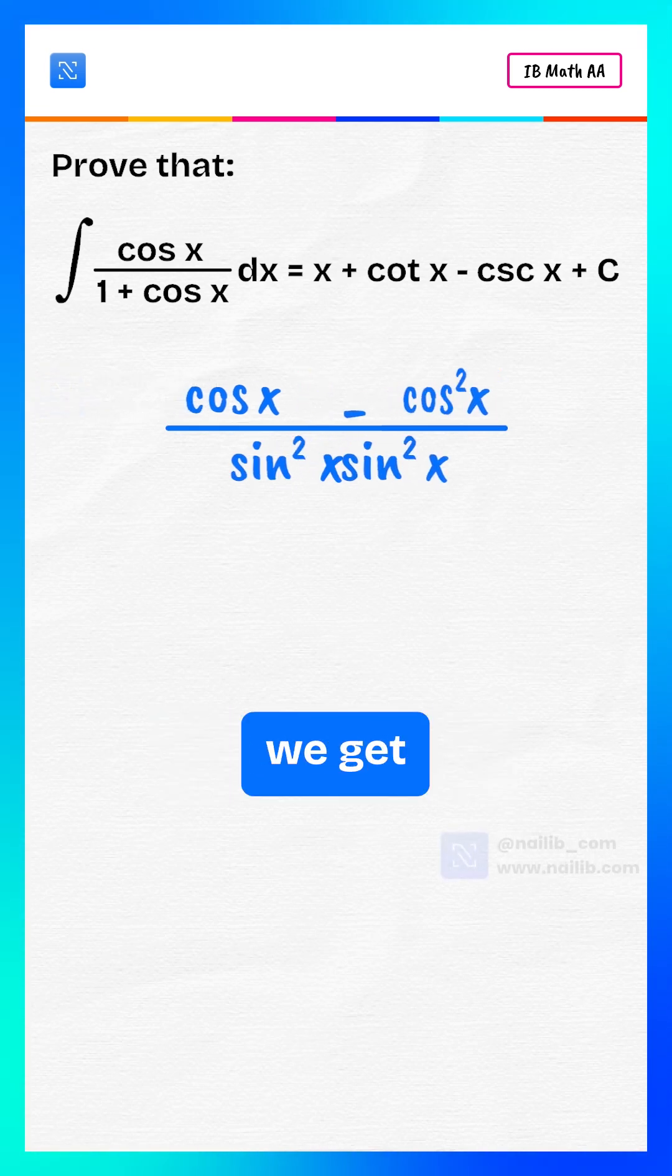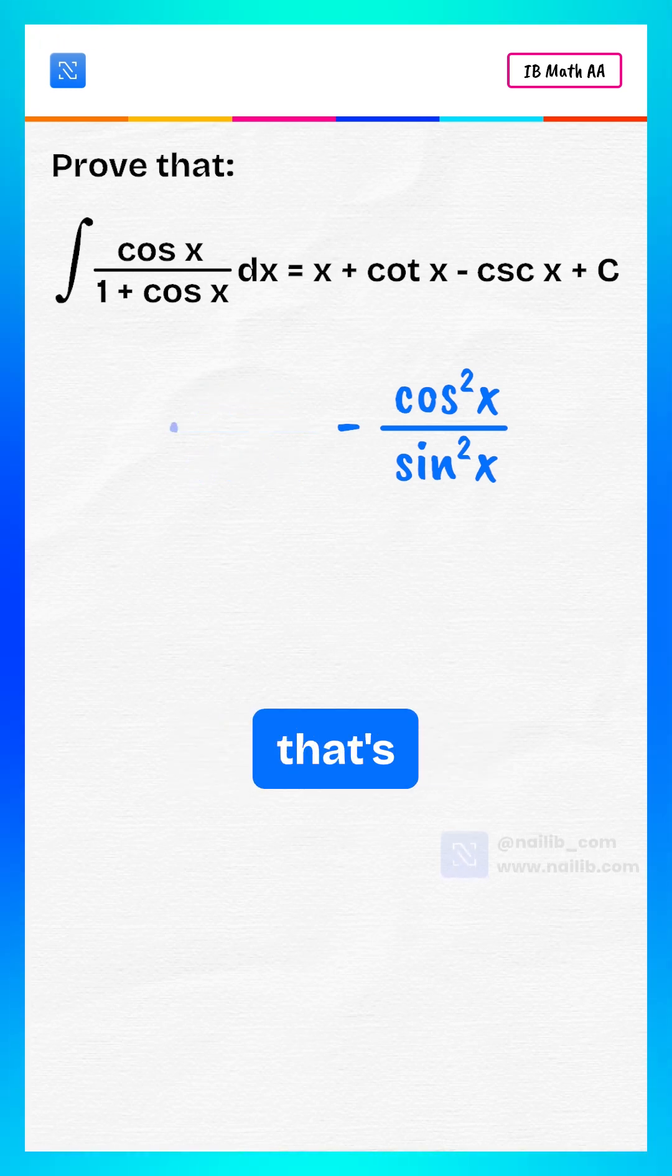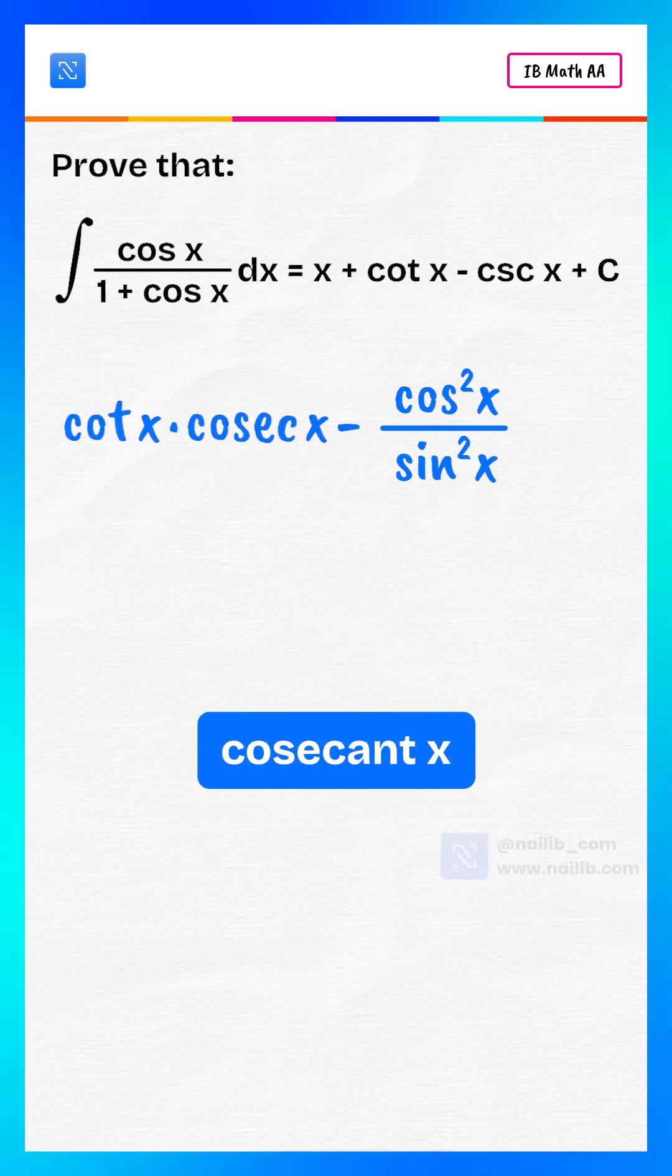Split the expression. We get two terms. First term: cosine x over sine square x. That's cotangent x times cosecant x.